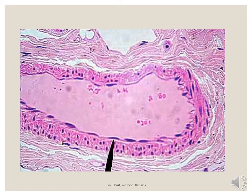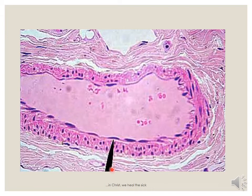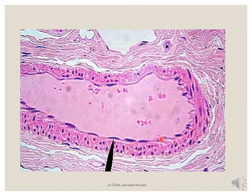This is another slide of the simple squamous epithelium, that is the pavement epithelium. We can see the basement membrane separating this single cell layer thick epithelium from the underlying connective tissue. The arrow points to the nucleus of one of the cells of the epithelium. The nucleus is stained dark, and then the cytoplasm is lighter. We can see that it is lining a mesothelium, something like probably a pleura or even a peritoneum.